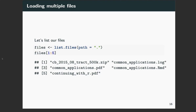So let's start off by listing some files in our current directory. If I just use the list.files function and put the little dot in the path here, this is just going to return every single file in my current working directory. You can see my working directory right now — I've got a zip file, a .log file, a couple of PDFs and a markdown.